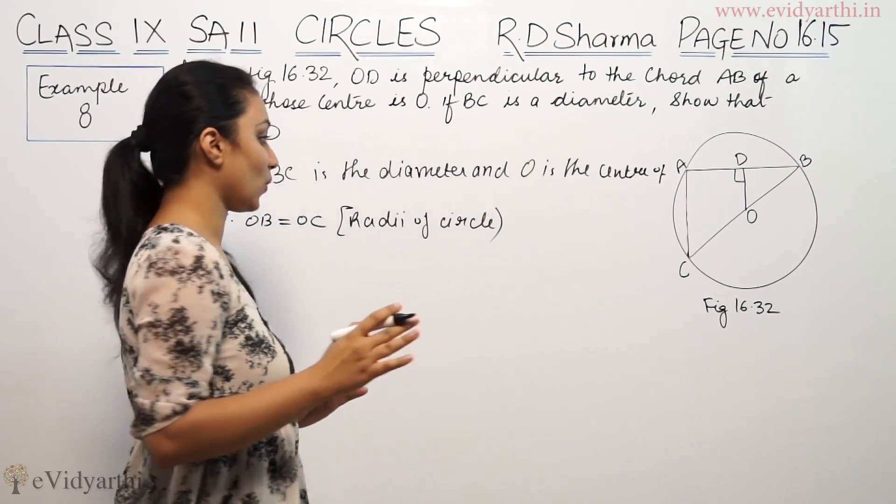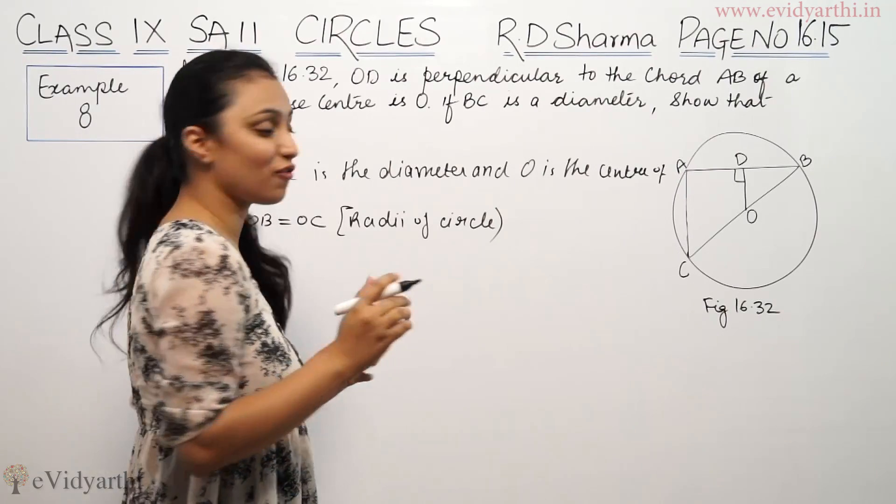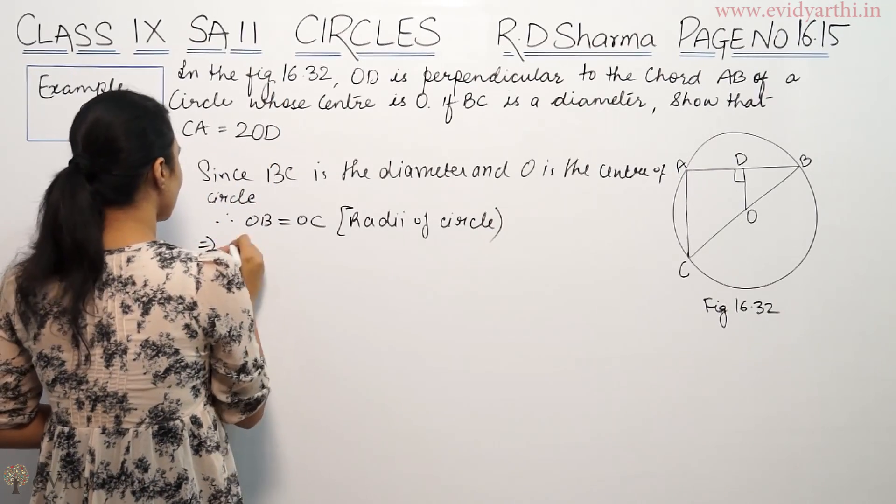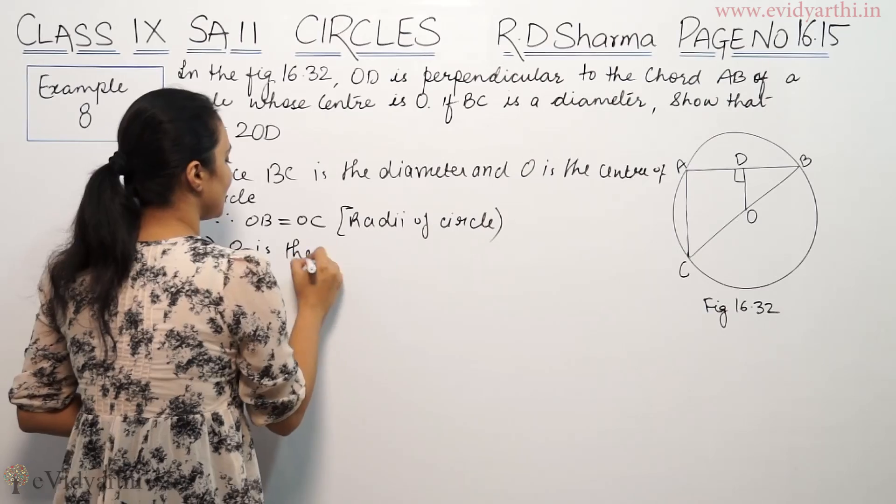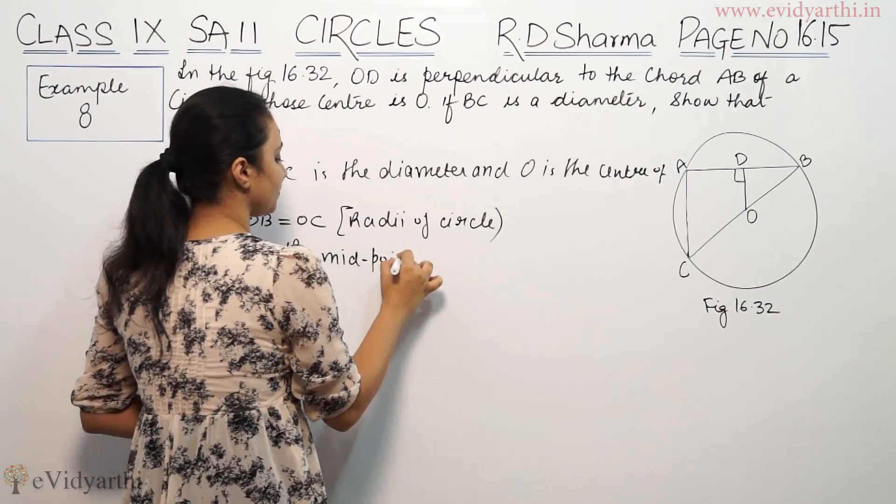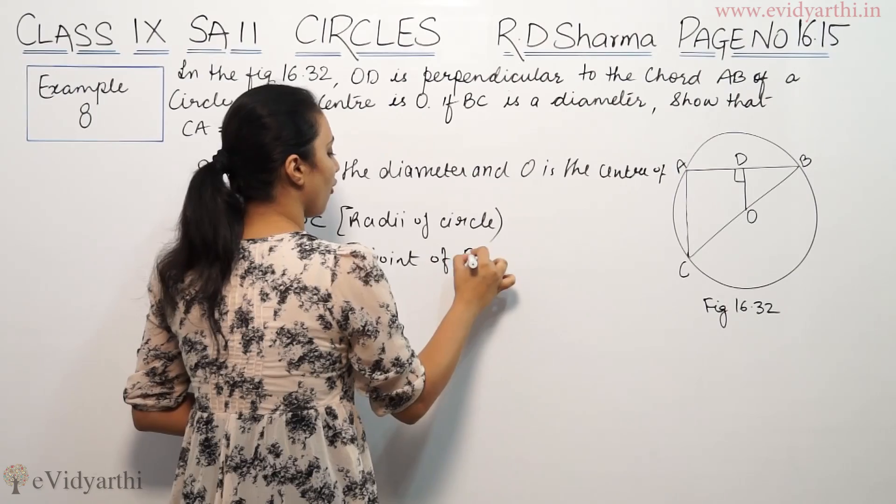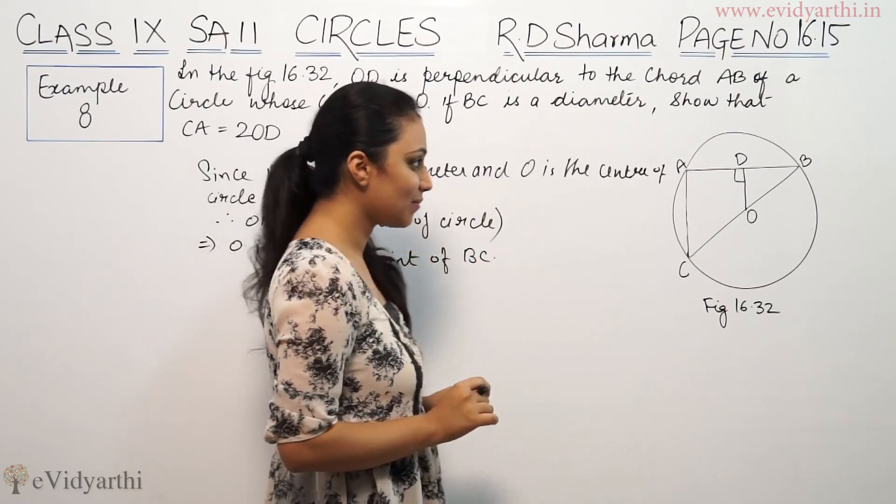These two are equal. That means O is the midpoint of BC. This implies O is the midpoint of BC.